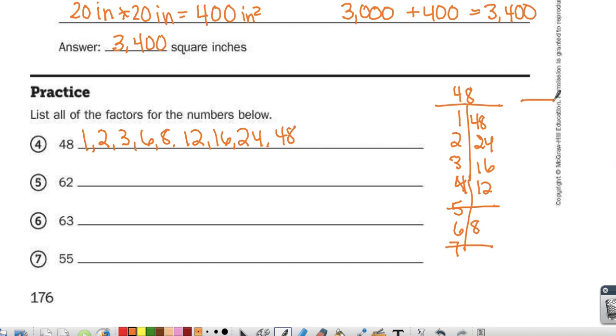Factors of 62. 1 times 62, it's even, so 2 can go in 31 times. 3, let's see, 6 plus 2 is 8. 3 is not a factor of 8, so 3 is not a factor of 62.